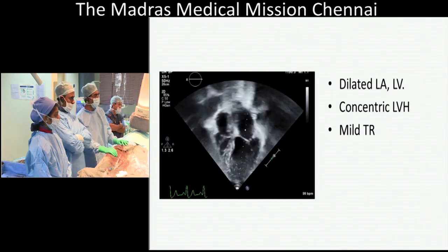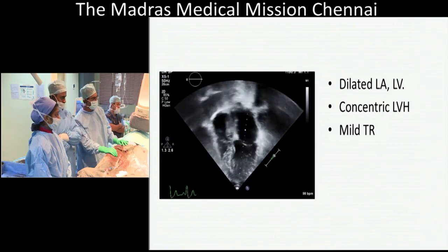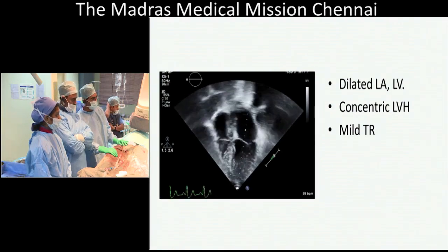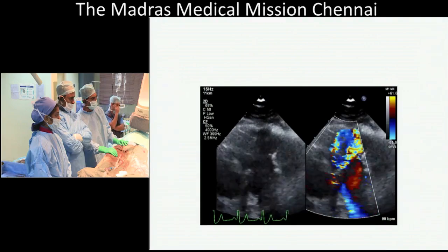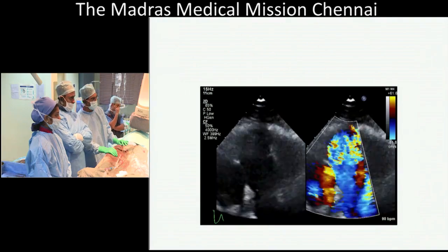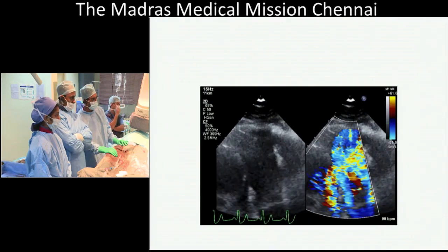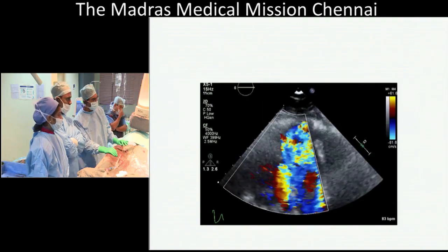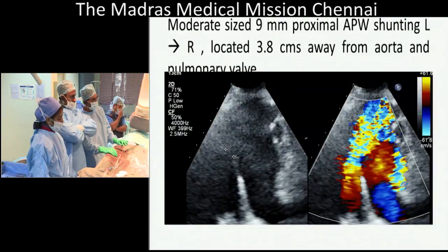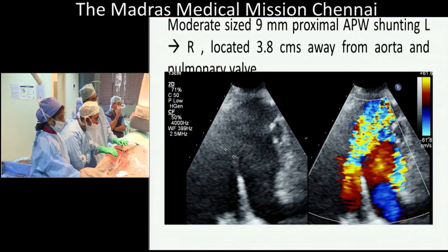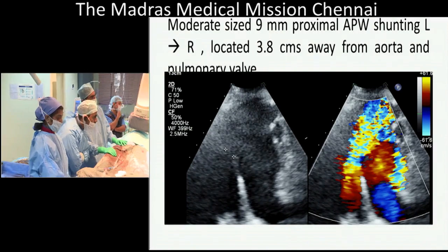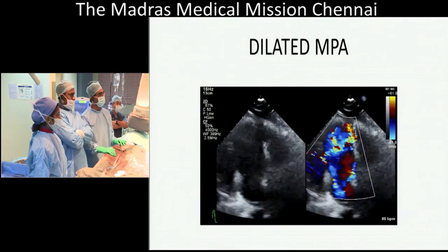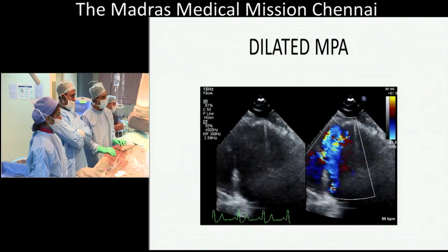These are the echo pictures. This is the 4-chamber view showing dilated LA and LV, concentric LVH and mild TR. This is the short axis view showing the aortopulmonary window — a moderate size 9 mm proximal aortopulmonary window shunting left to right, located 3.8 cm away from the aortic and pulmonary valves. This is the dilated MPA segment.